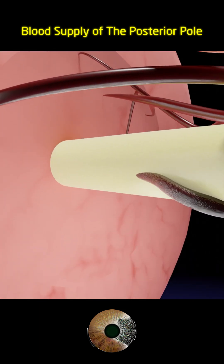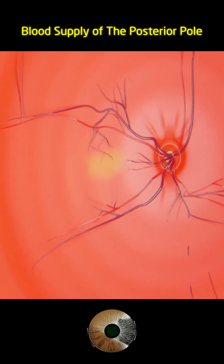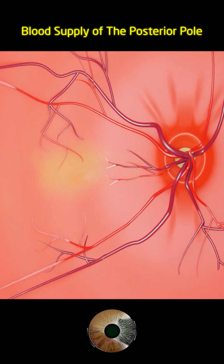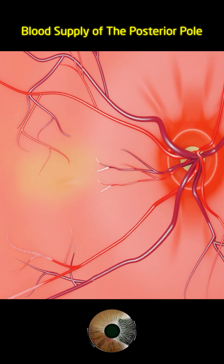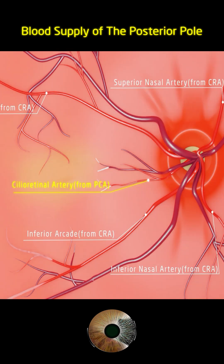At a point approximately 10 millimeters behind the eyeball, it pierces the optic nerve sheath at the level of the optic disc. The CRA emerges from the optic nerve head and immediately branches into four major retinal arterioles, supplying the inner two-thirds of the retina, from the nerve fiber layer to the inner nuclear layer.